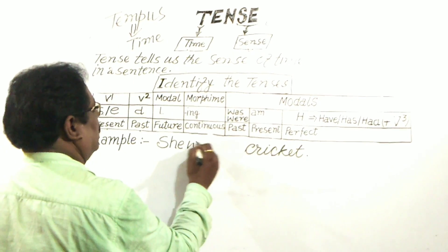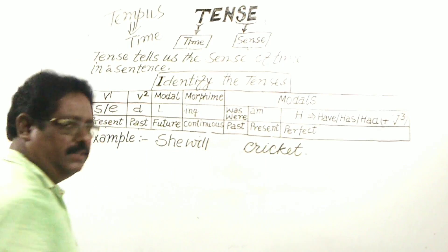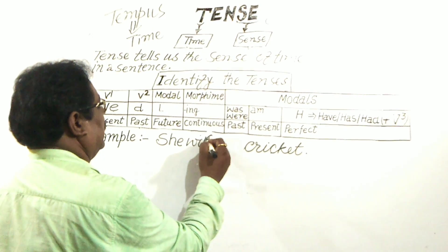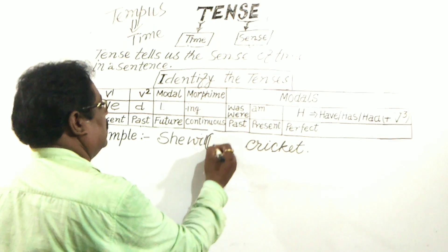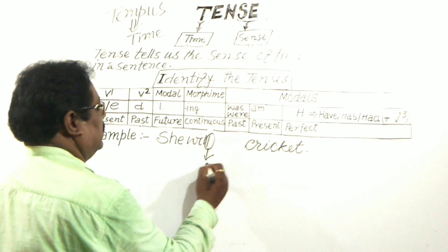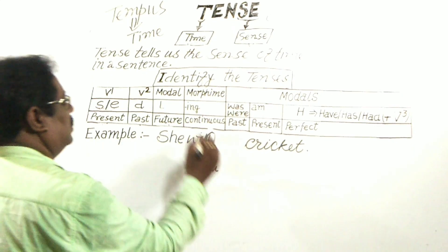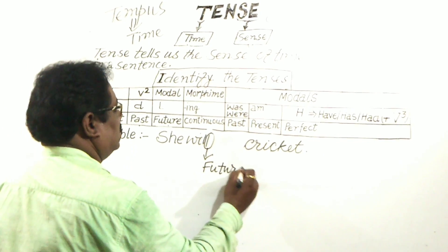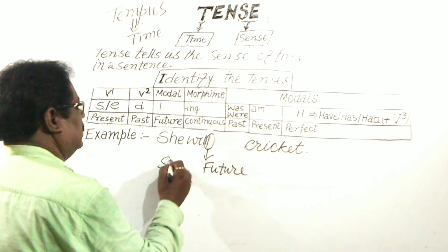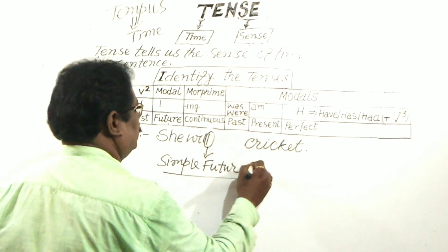'C will play cricket.' Here you see the modal ending with L. L denotes future tense, so this sentence is in simple future tense.